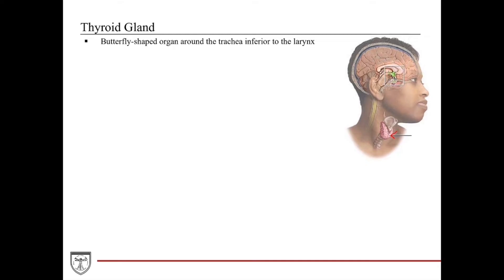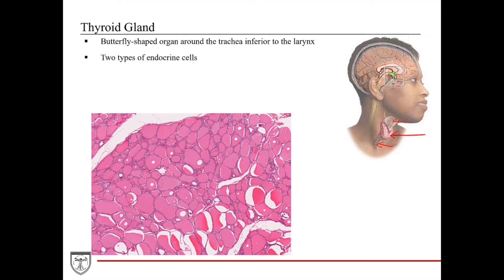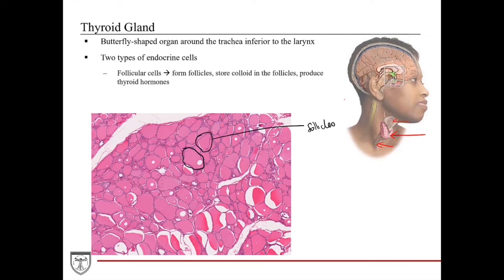The thyroid gland is a butterfly-shaped organ that sits just below the larynx and in front of the trachea. This fleshy and delicate organ is comprised of two types of endocrine cells. In this histological view of the thyroid, we can appreciate that these endocrine cells are forming spherical secretory units called the follicles. Primarily, one type of endocrine cell forms these follicles — we call these the follicular cells.